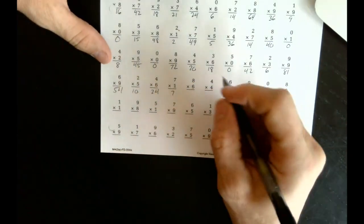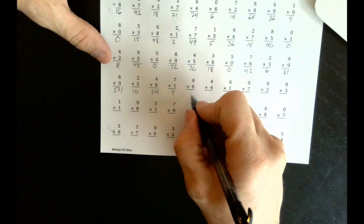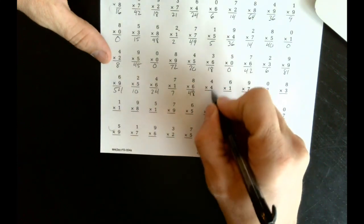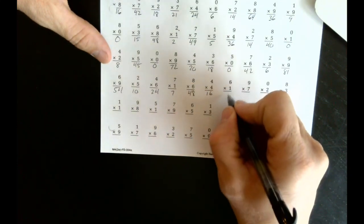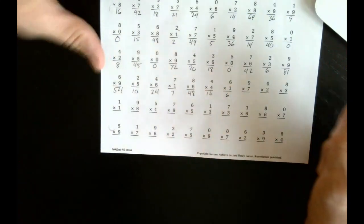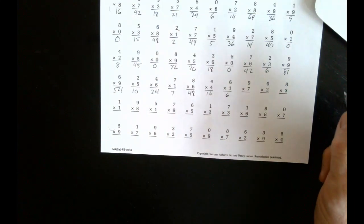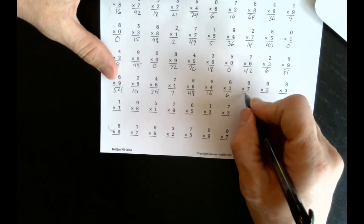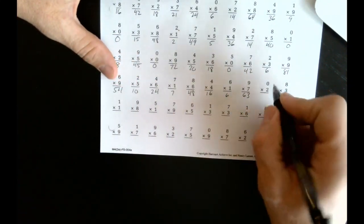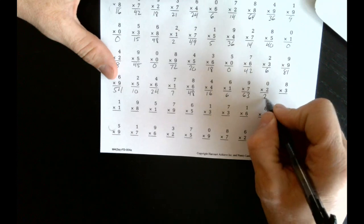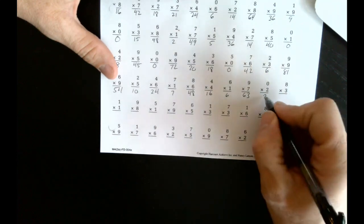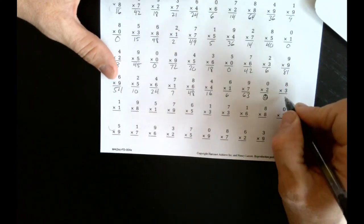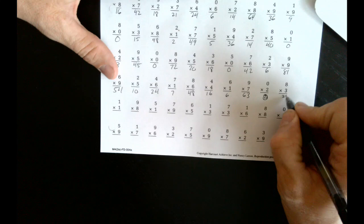7 times 1 is 7. 8 times 6 is 48. 4 times 4 is 48. 4 times 4 is 16. 6 times 4 is 16. 6 times 1 is 6. 9 times 7 is 63. 0 times 2 is 0. 8 times 3 is 24.